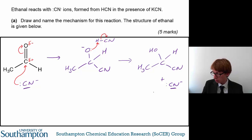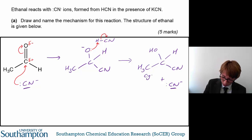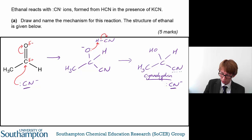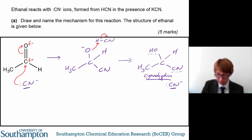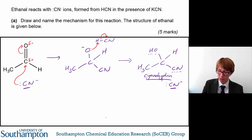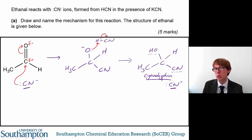The product of this reaction is known as a cyanohydrin. The reason it's called a cyanohydrin is because it contains a cyano group (cyanide group) and an OH group. You may also hear it called a hydroxynitrile — that just refers to the hydroxy group and the nitrile group. The CN group can be called either a cyano group or a nitrile group.